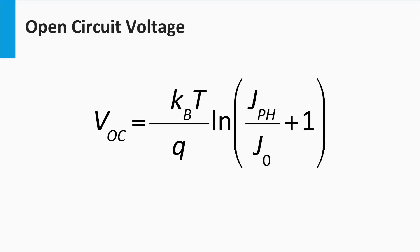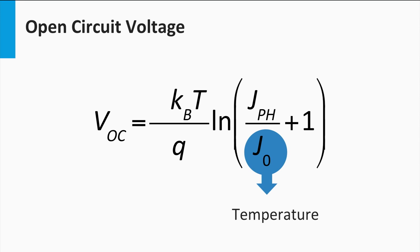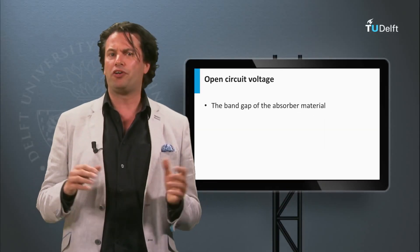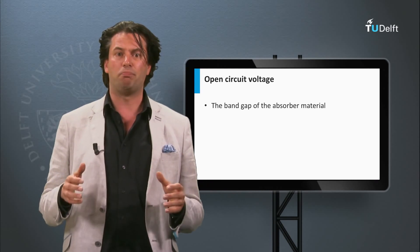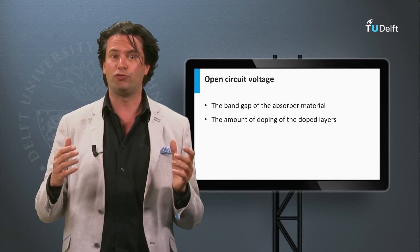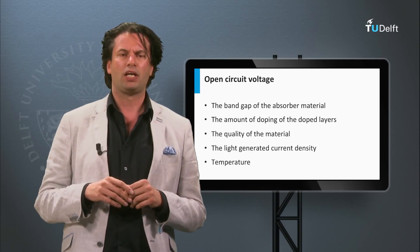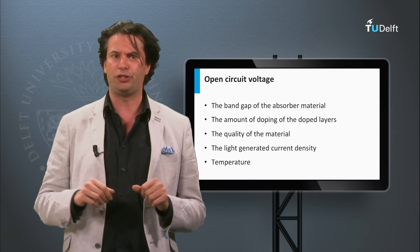Secondly, the open circuit voltage depends on temperature. Although the equation at first glance suggests that the open circuit voltage increases with temperature, this is not the case. The leakage current J0 of the diode strongly depends on temperature: the higher the temperature, the larger the leakage current, and the smaller the open circuit voltage will be. The open circuit voltage also depends on other factors such as the band gap of the absorber material, the amount of doping of the doped layers, and the quality of the material — or in other words, the defect density. We will come back to these relations later during the course.